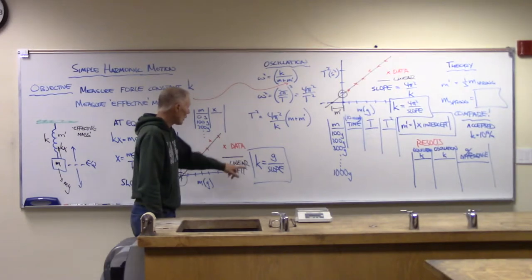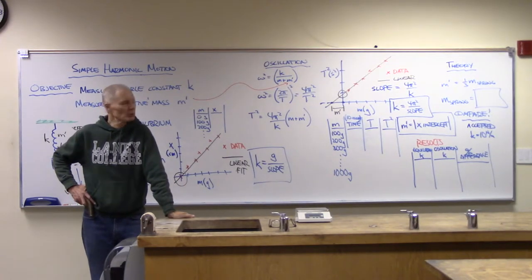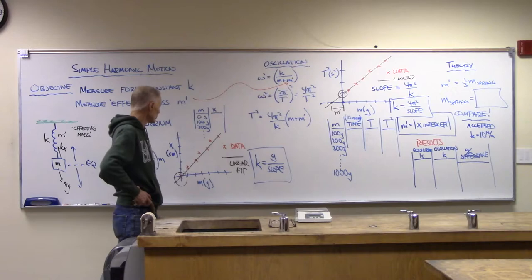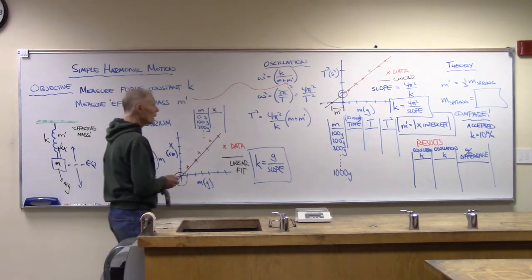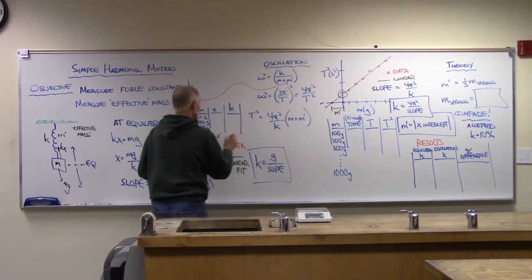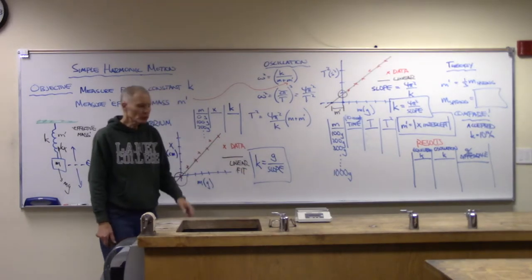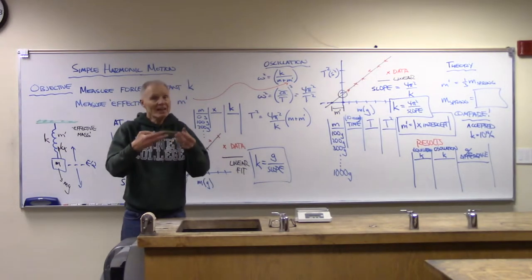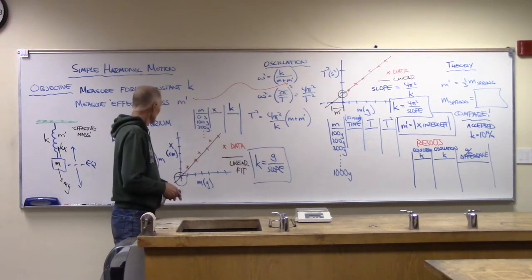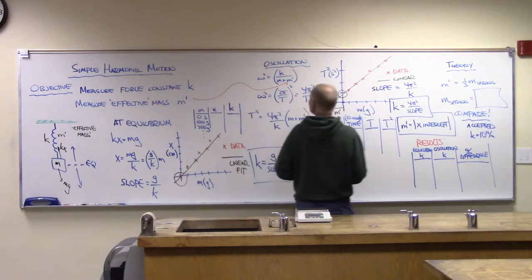We could also get individual k values from each measurement and add a k column to the data table — that's not a bad idea. But what we're really after is the averaging. If this is an ideal spring, x should be proportional to m and the data will line up. The equilibrium method is written up as a check once we've done the oscillation method.